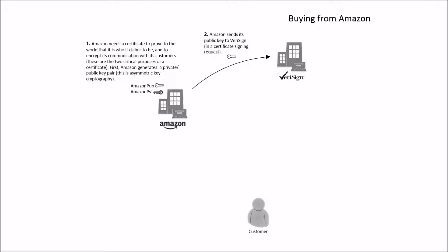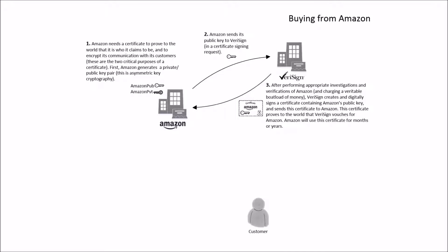Next, Amazon sends its public key to VeriSign in a certificate signing request. After performing appropriate investigations and verifications of Amazon and charging a veritable boatload of money, VeriSign creates and digitally signs a certificate containing Amazon's public key and sends this certificate to Amazon. This certificate proves to the world that VeriSign vouches for Amazon. Amazon will use this certificate for months or years.